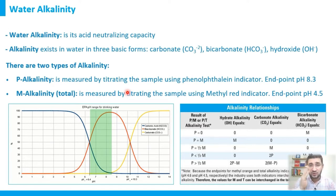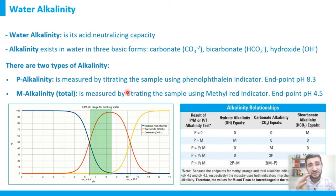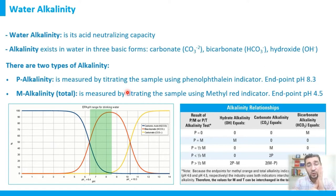P-alkalinity occurs when the water pH is above 8.3. If the pH is between 7 and 8, or below 7, there is almost zero P-alkalinity. As a rule of thumb: P-alkalinity only exists in water with a pH greater than 8.3. Below that, the result is essentially zero.